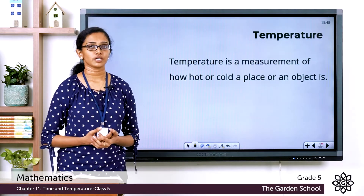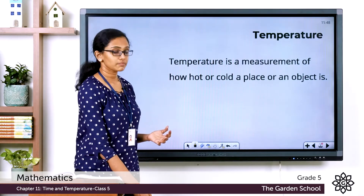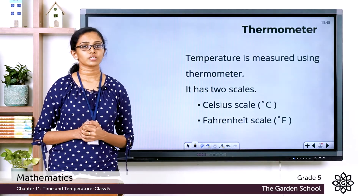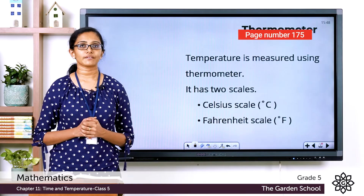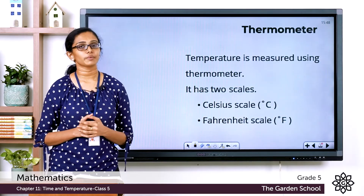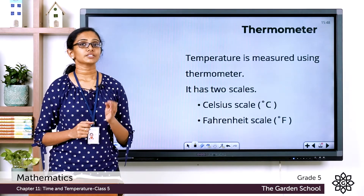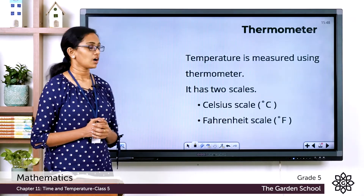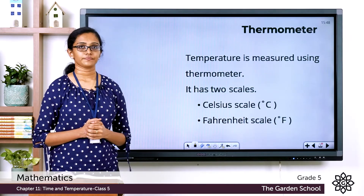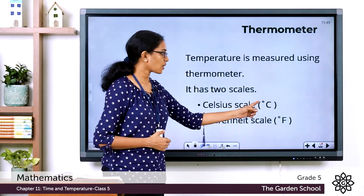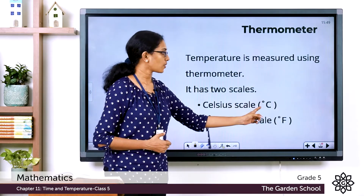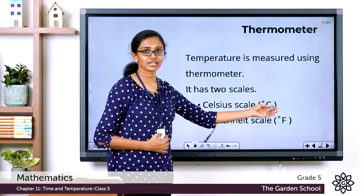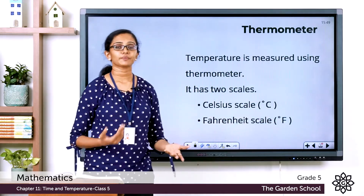Now how do we measure temperature? Temperature can be measured using a device called a thermometer. In your textbook, please turn to page number 175. Do you see the picture of a thermometer there? You can see two scales on a thermometer — it has a Celsius scale and a Fahrenheit scale. The Celsius scale is represented by a small circle at the top followed by a capital C, and the Fahrenheit scale is represented by a small circle at the top followed by the capital letter F.